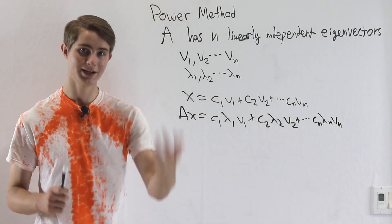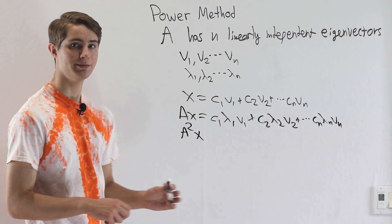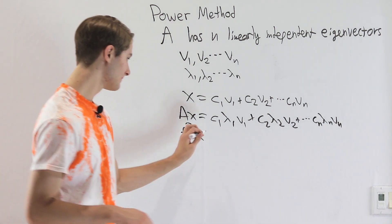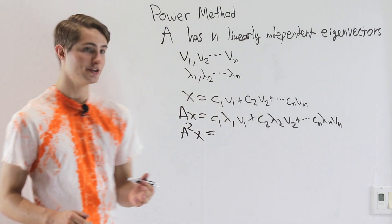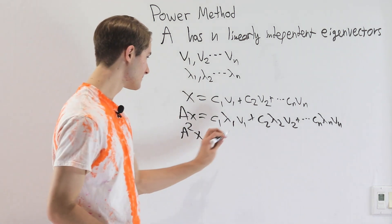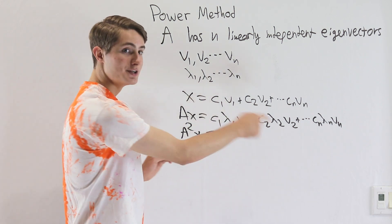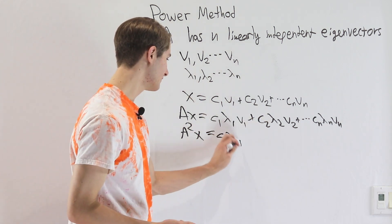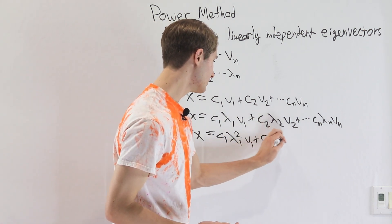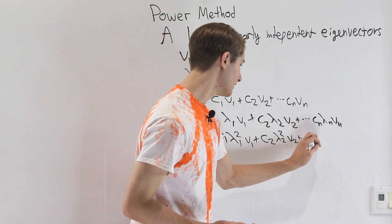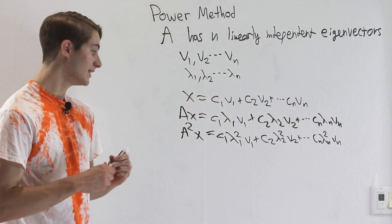Now what happens if we apply the matrix again? Well then we get A squared x on the left side, which just means we apply the matrix twice. Then on the other side, c1 lambda 1 is again a constant, so we don't have to worry about that when we're multiplying by the matrix. And then we're just going to get lambda 1 and then lambda 1 times v1 again, so we get lambda 1 squared v1. Then c2 lambda 2 squared v2 and all the way up to cn lambda n squared vn.